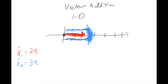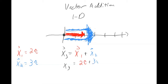So if we wanted to add, let's call it x3 equals x1 plus x2. In mathematical form, it would just be 2i hat plus 3i hat, and that would leave you with 5i hat. So if you drew that vector, you would start from the origin and it would point towards 5i hat, like this.